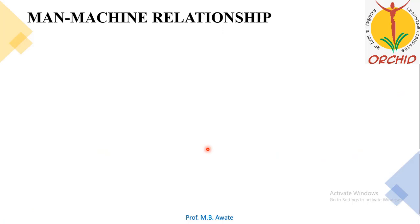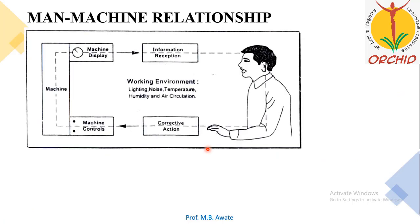In the man-machine relationship figure, you can see a person working on a machine. There are parameters like the working environment, which includes lighting, noise, temperature, humidity, and air circulation. Ergonomics not only deals with man and machine but also with the working environment — a combination of all these is called ergonomics.